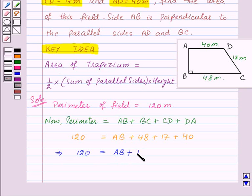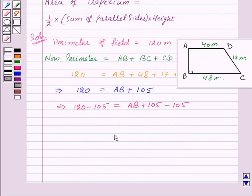Subtracting 105 from both sides, we get 120 minus 105 equals AB plus 105 minus 105. So 120 minus 105 equals 15, and 105 and minus 105 get cancelled. We are left with AB. Therefore, length of AB is equal to 15 meters.